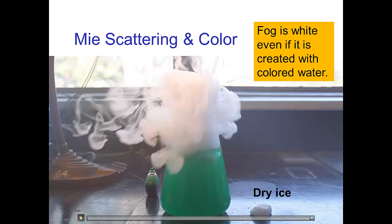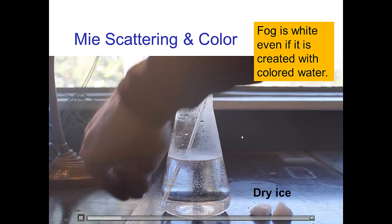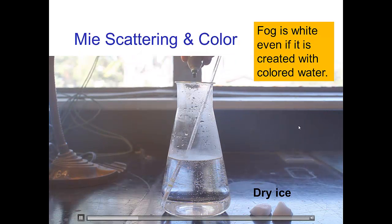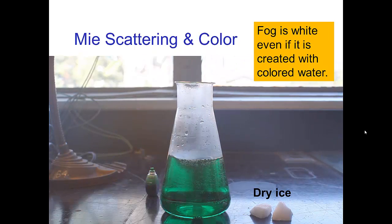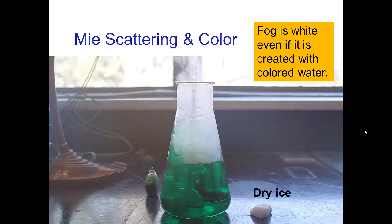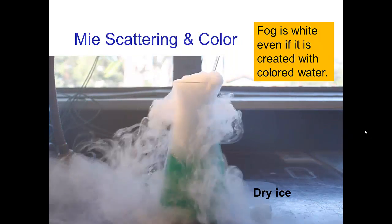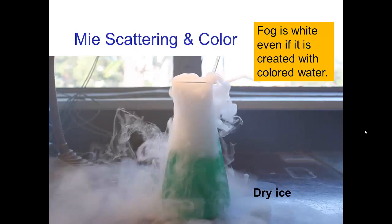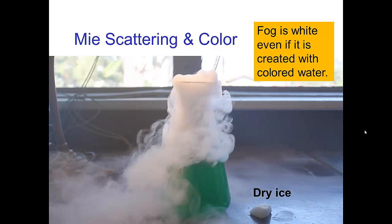Let's see an example of this. I have some warm water here — you can see maybe a little bit of steam coming out — and we're going to dye it green, and then put a chunk of dry ice into the water to create some fog. We're going to see tiny water droplets bubbling out. And even though the water is tinted green, you see that the fog is white, because what you're seeing is the scattering of light by these tiny droplets.